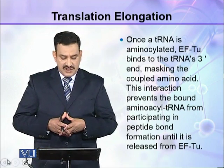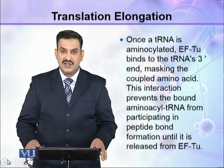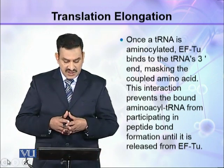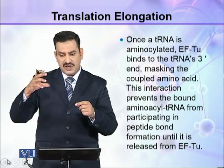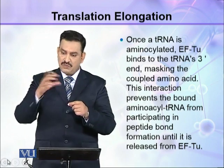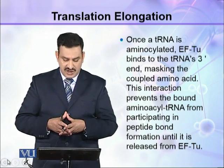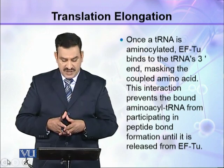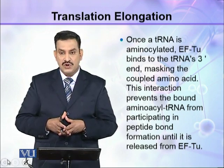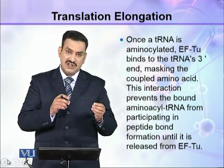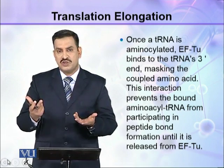EF-TU brings the aminoacyl tRNAs and facilitates their binding — they cannot bind on their own. Once a tRNA is aminoacylated, EF-TU binds to the tRNA's 3' end, masking the coupled amino acid, since the amino acid is also joined at the 3' end. This interaction prevents the bound aminoacyl tRNA from participating in peptide bond formation until it is released from EF-TU.